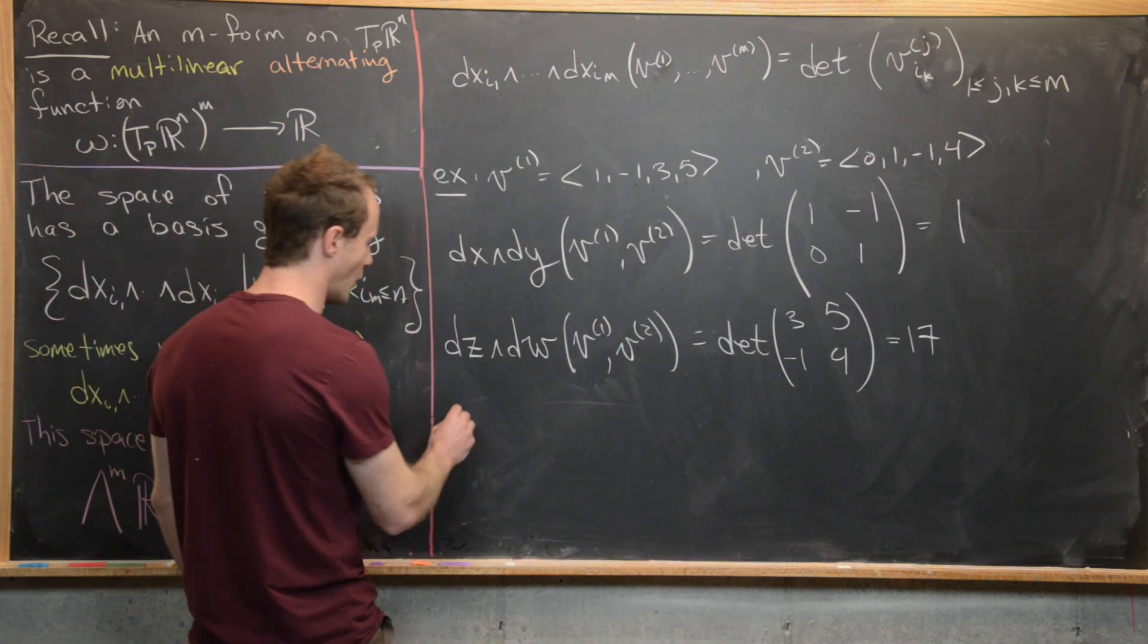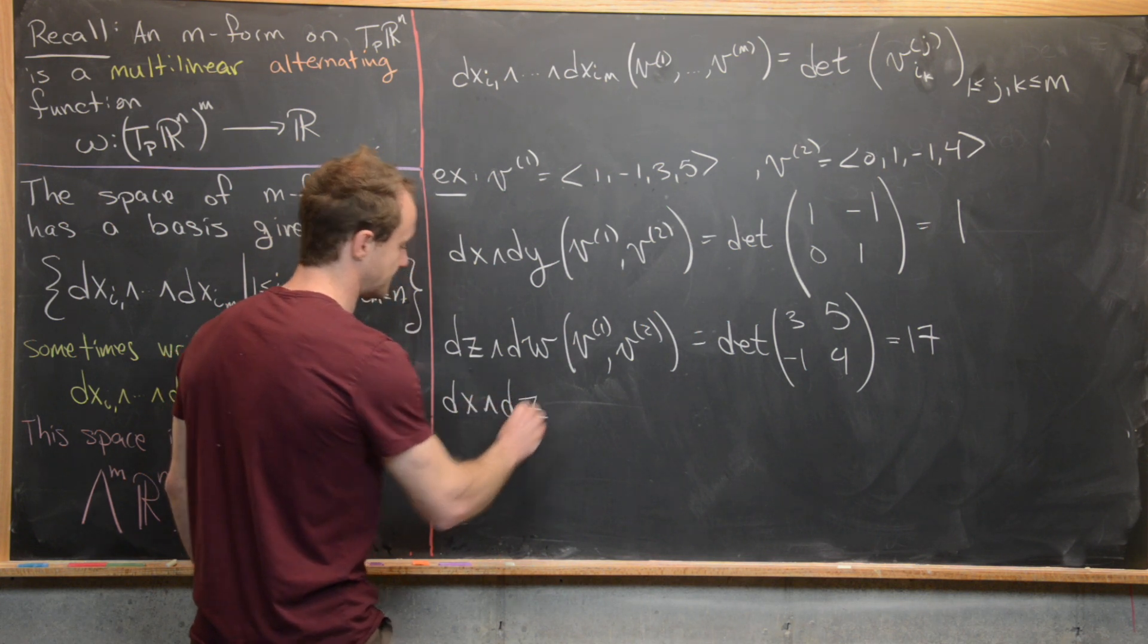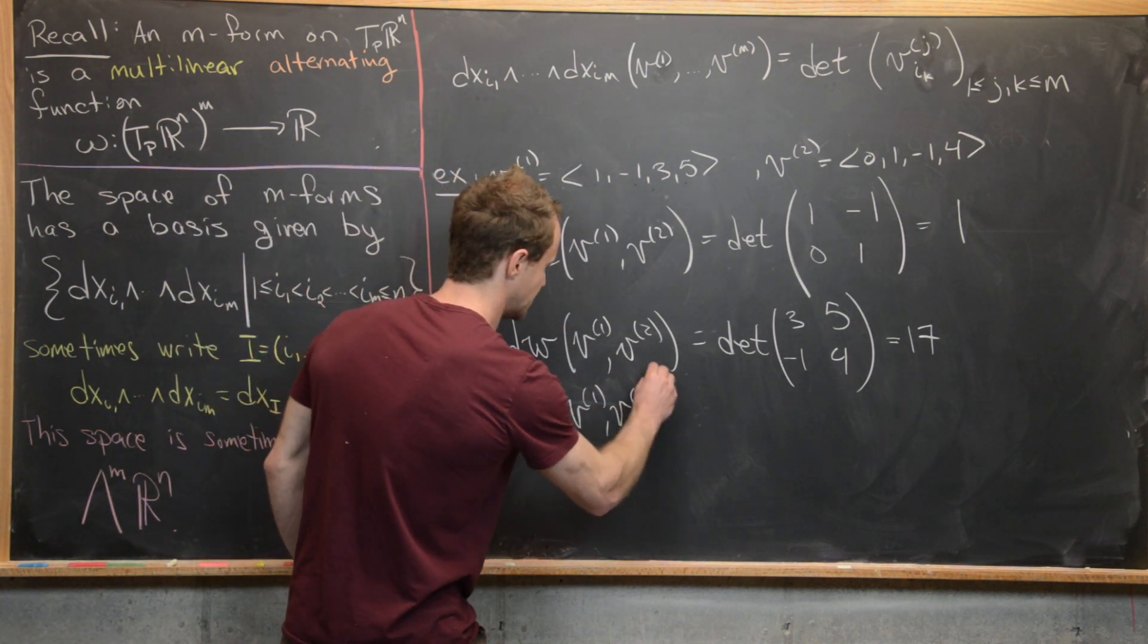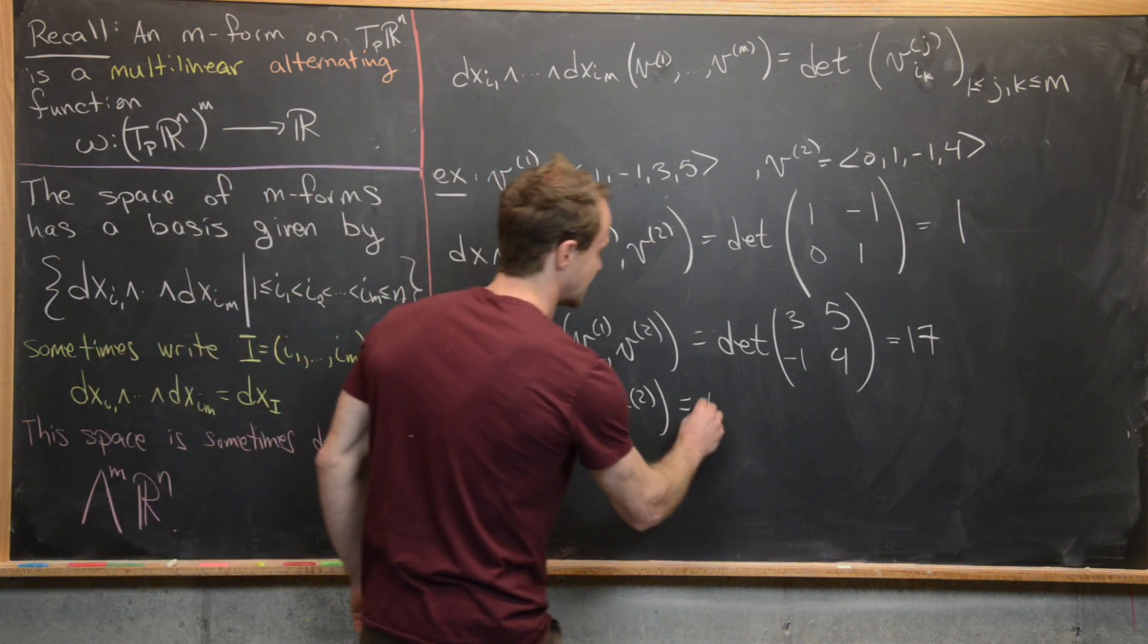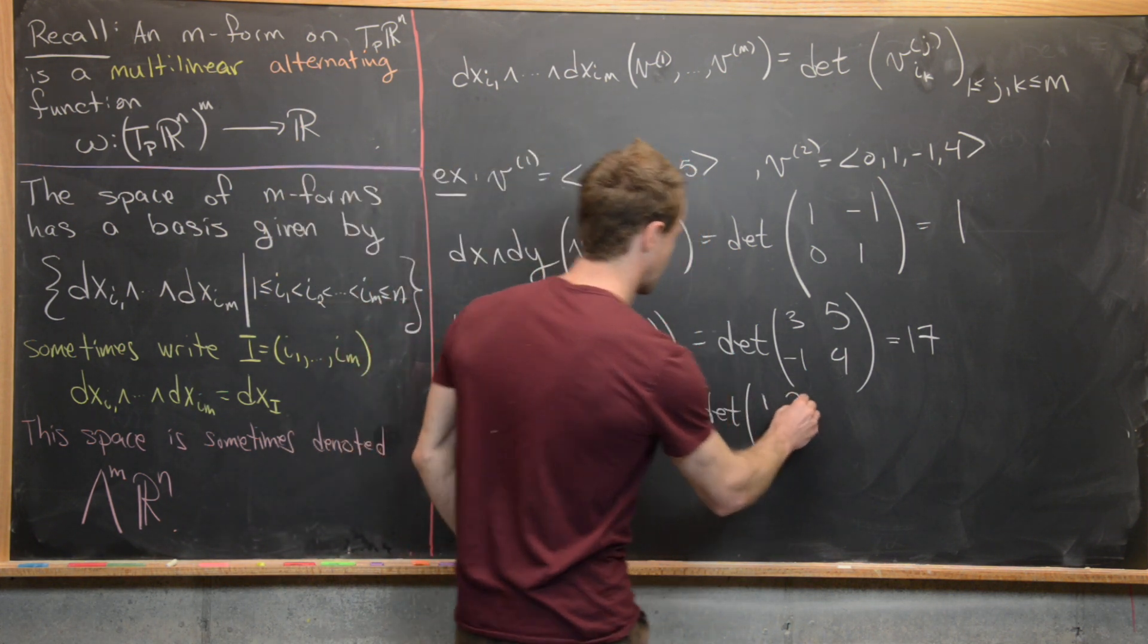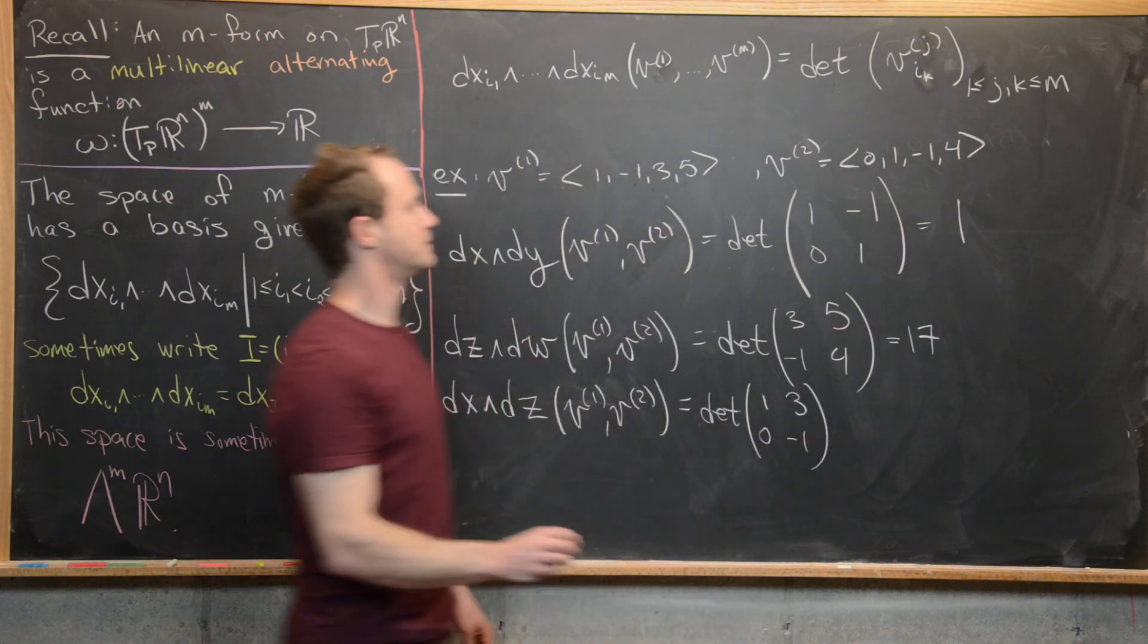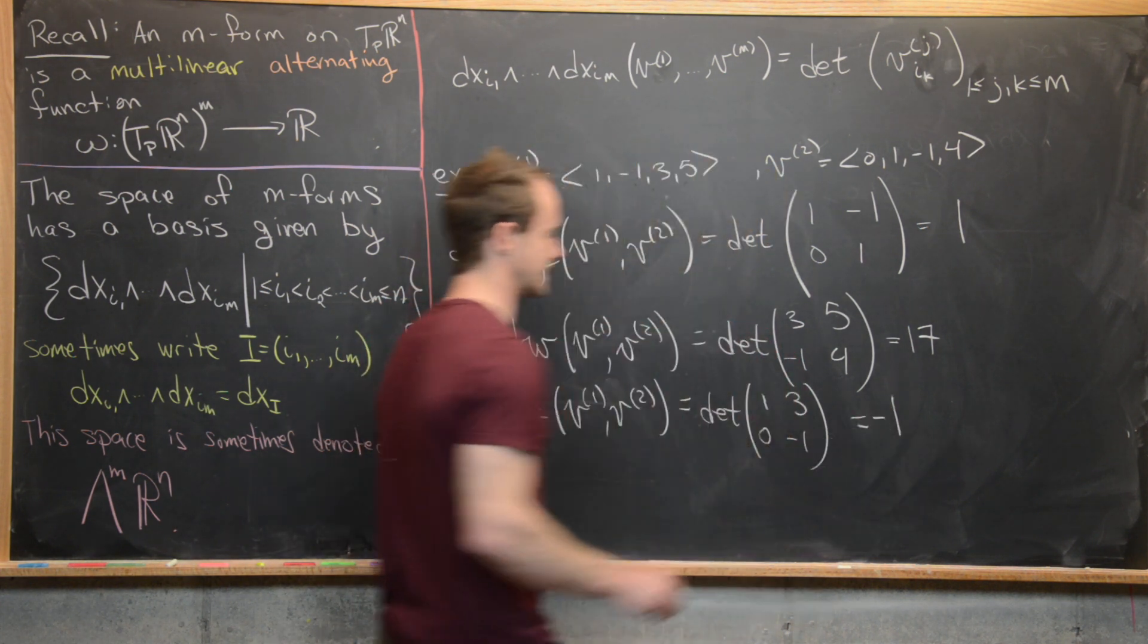So let's go ahead and look at one more. Let's say we do DX wedge DZ. So that'll be the first entry and the third entry from each of these vectors. So the first entry and the third entry, that's going to give us the determinant of (1, 3), and then (0, -1). So the determinant of that is negative 1.